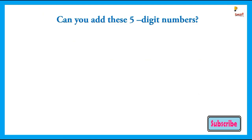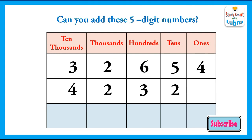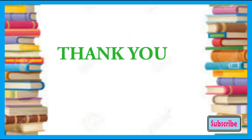Can you add these five-digit numbers? One of the sums is given and you have to add them. You have to find the sum of 32,654 and 42,322. Good luck, and thank you!